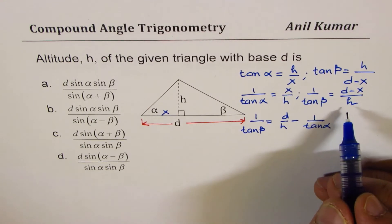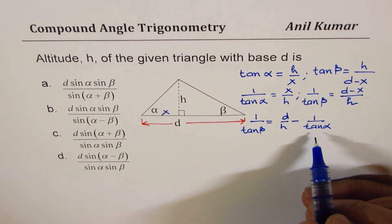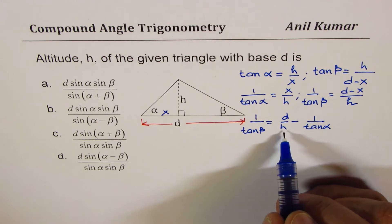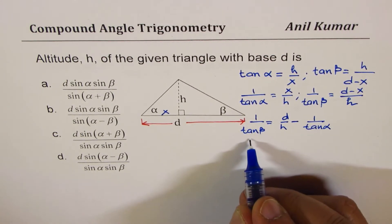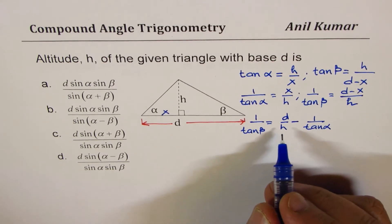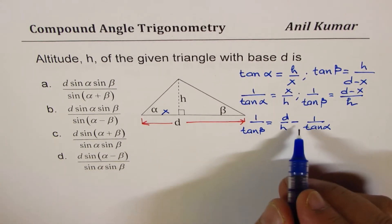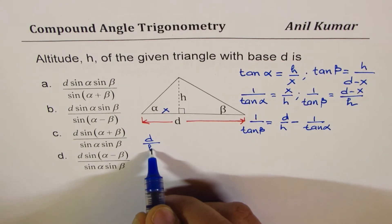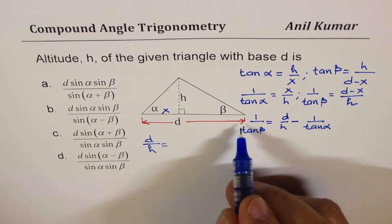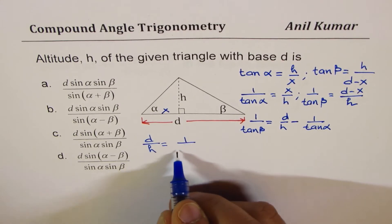Now we can actually isolate h, so that is the most important part. Bringing it to this side we get d over h is equal to, taking it to this side, 1 over tan α plus 1 over tan β.